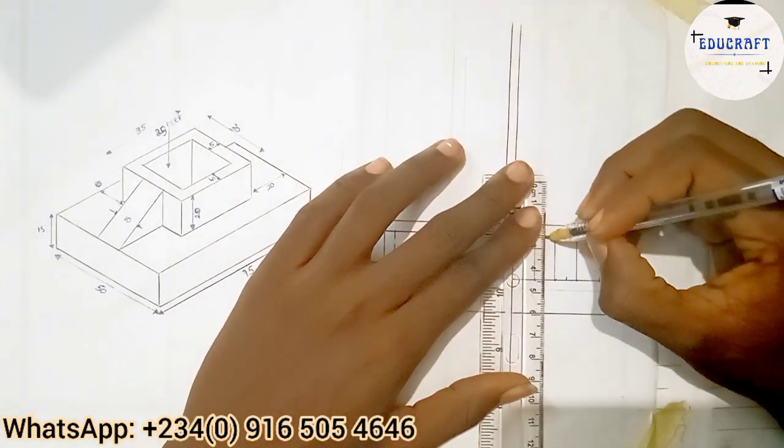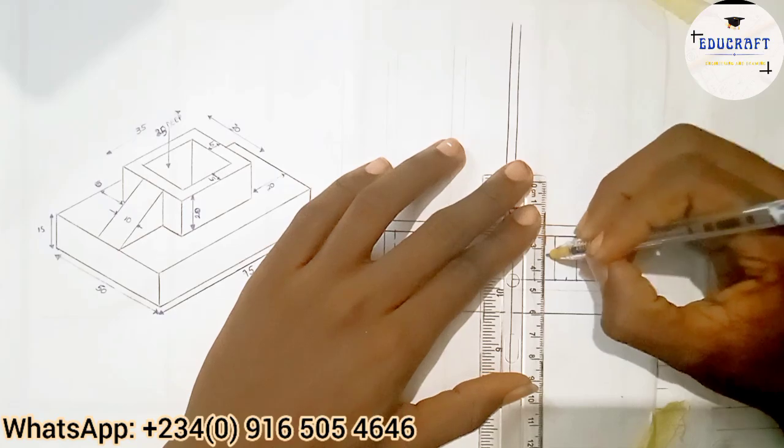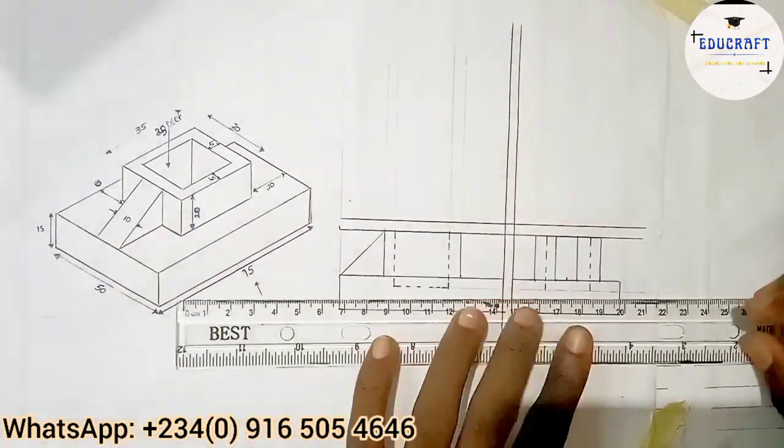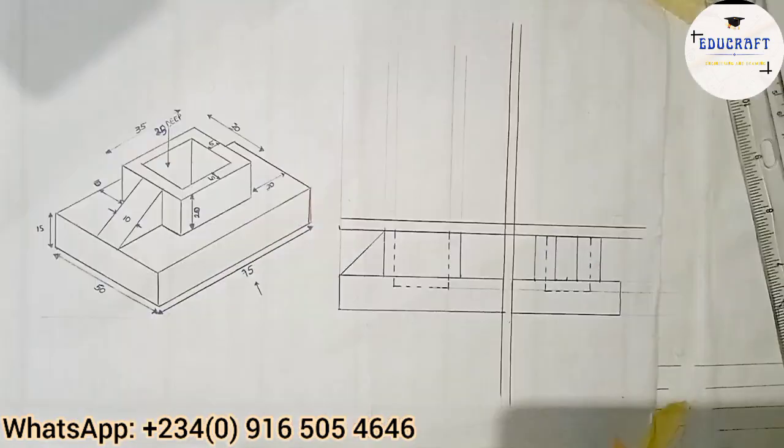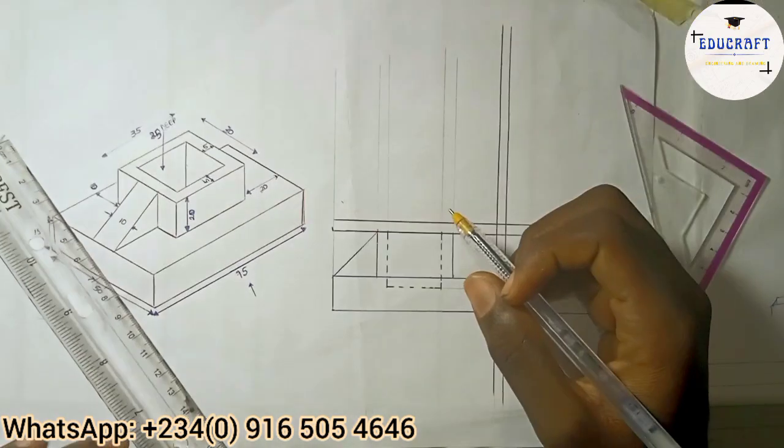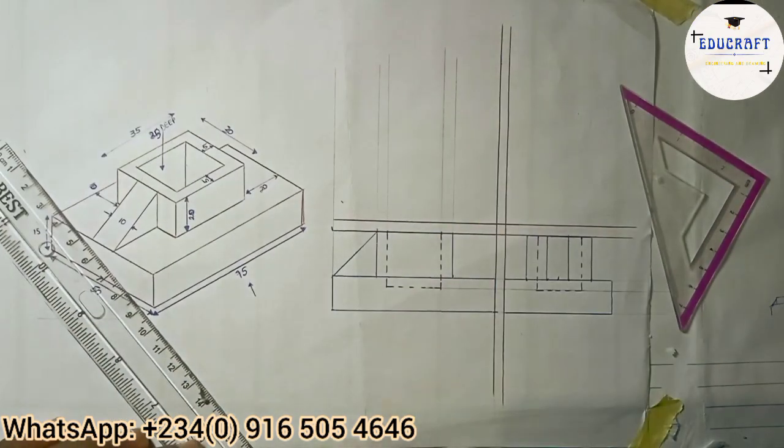So I'll just draw it straight to that line. And let's get to our top view, okay. So to draw the top view I'm going to do some elongation.